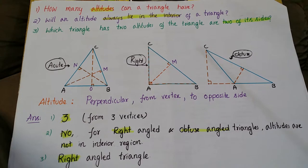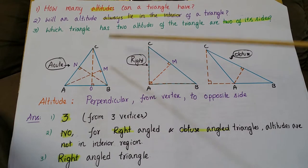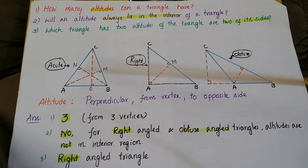Before going to answer these questions, we have to know about altitude. An altitude is a perpendicular from a vertex to opposite side in a triangle.